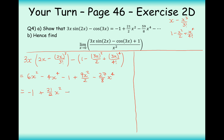Adding the plus dot dot dot, we've completed part A and confirmed the result matches the required expression. That's -1 + 21/2·x² - 59/8·x⁴ plus higher order terms.